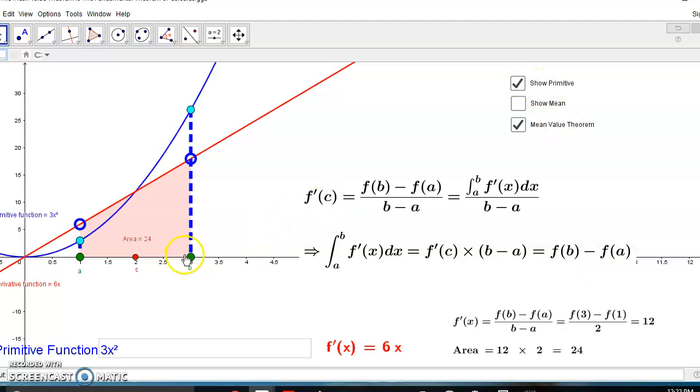In other words, if this blue function is a primitive function and this is a derivative, then this length minus this length here gives us the area inside here.